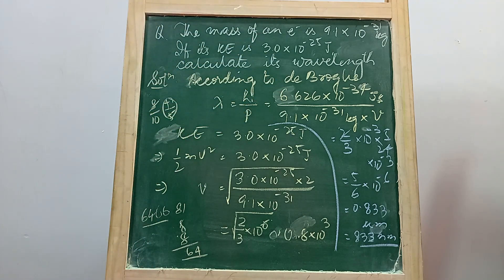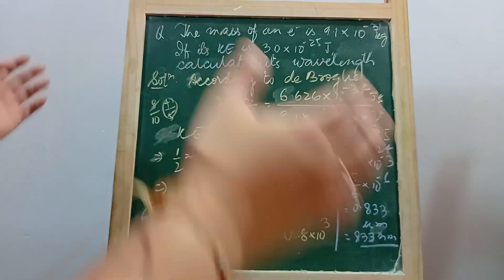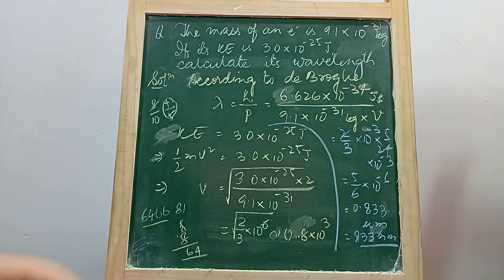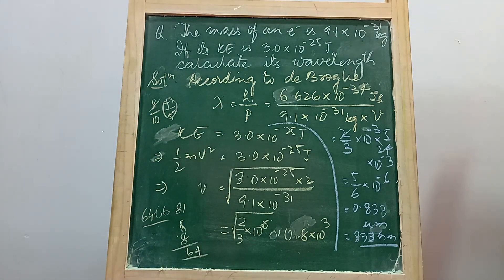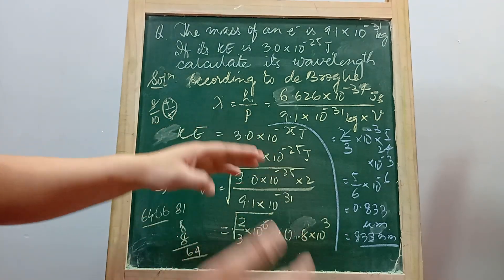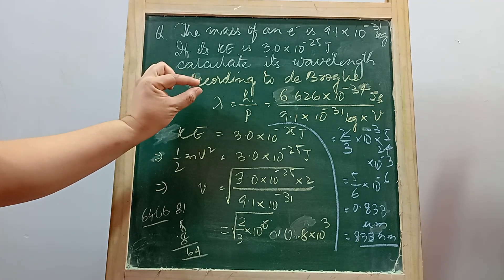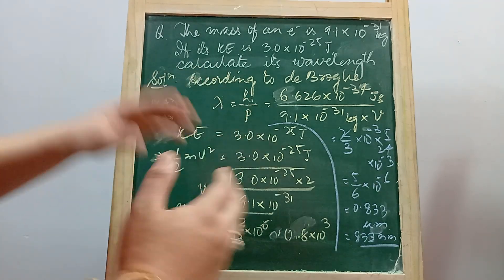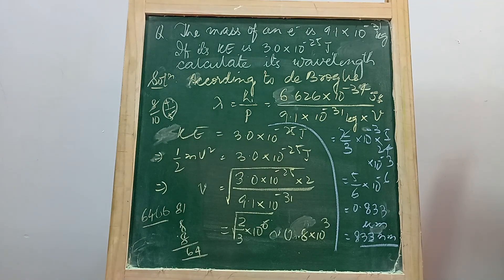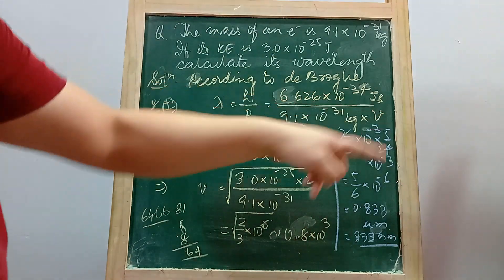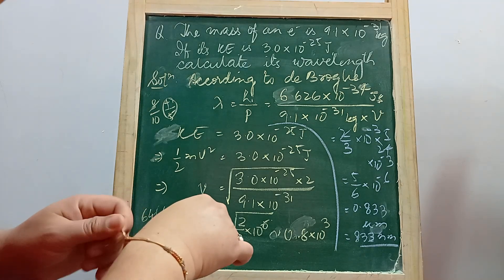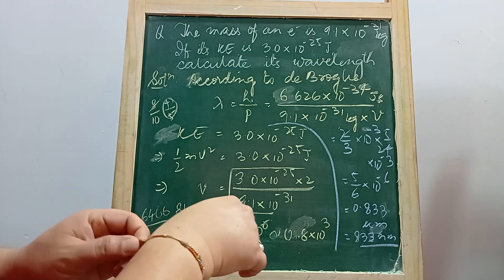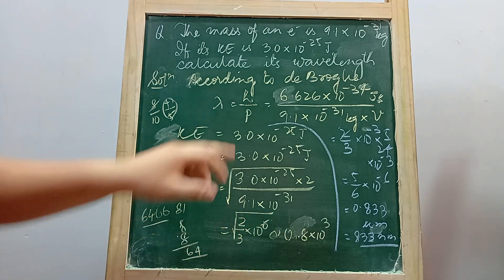According to de Broglie, the French physicist, the wavelength associated with any moving body — whether it's a large car, the Earth, or a sub-atomic particle like an electron — is given by λ = h/p, Planck's constant divided by its momentum. The wavelength and momentum are inversely proportional: the greater the momentum, the smaller the wavelength. Planck's constant h = 6.626 × 10⁻³⁴ joule·seconds.